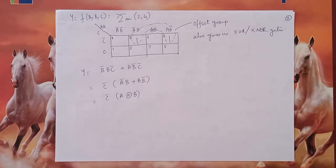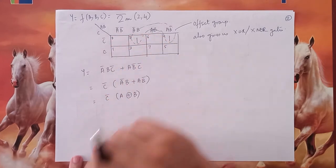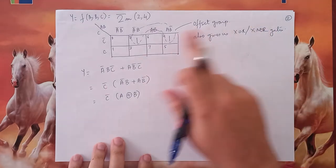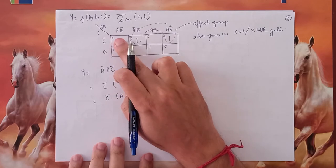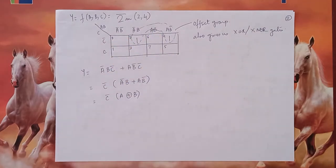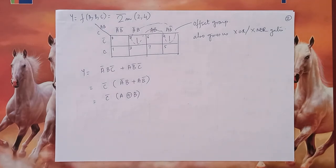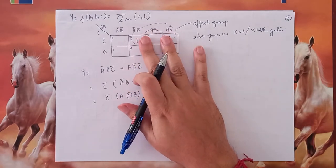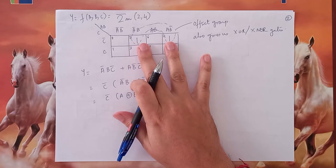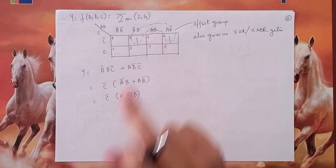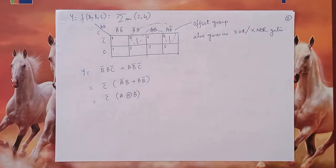We have to write this in the canonical form. We cannot simplify them anymore, so what we get is the canonical form corresponding to each of these ones. For minterm 2 it is A-bar B C-bar, and for minterm 4 it is A B-bar C-bar. Again, I can take C-bar common, and in the bracket I get something which is exactly the same as an XOR gate. So what we get is C-bar times (A XOR B). Just like the diagonal group, the offset group also gives us XOR or XNOR gates. An offset group is that kind of combination where two cells in the same row or column are separated by one cell in the middle.